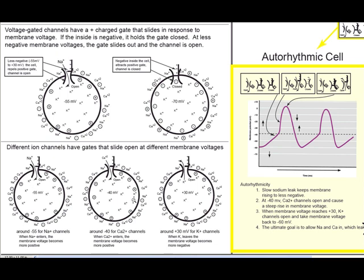Calcium channels — we touched on these briefly in A&P1 because they let calcium come in, in that case at plus 30 so that neurotransmitter would be released. Here there are calcium channels that open at around minus 40 millivolts, called fast calcium channels. They work the same as any other voltage-dependent channel: once the inside of the cell becomes a little more positive, the positive charges are less attracted, the gate slides open, and calcium comes in. Calcium is positively charged, so the cell goes more positive.